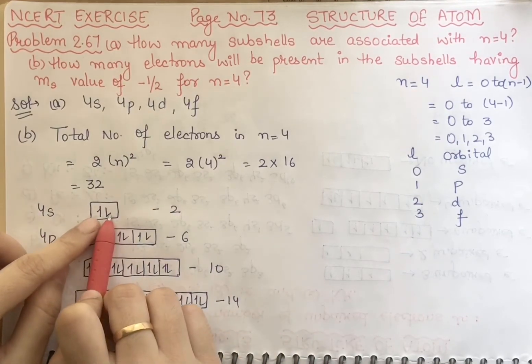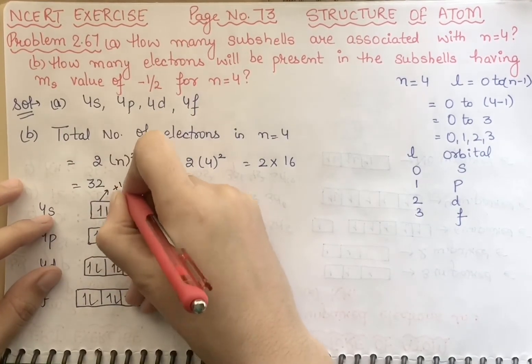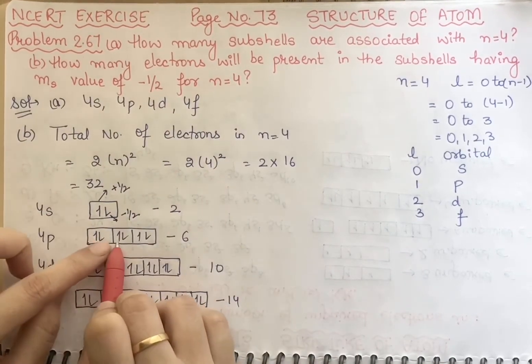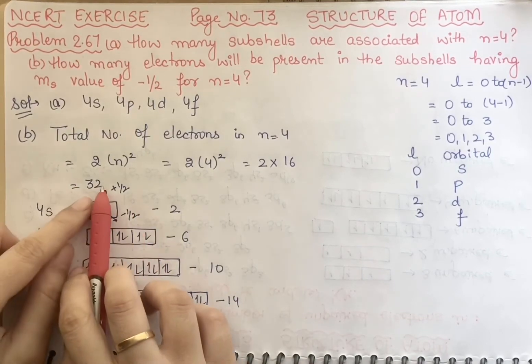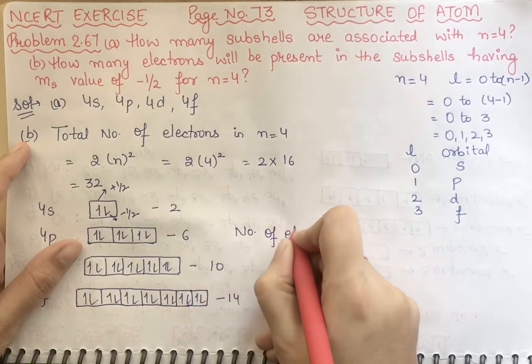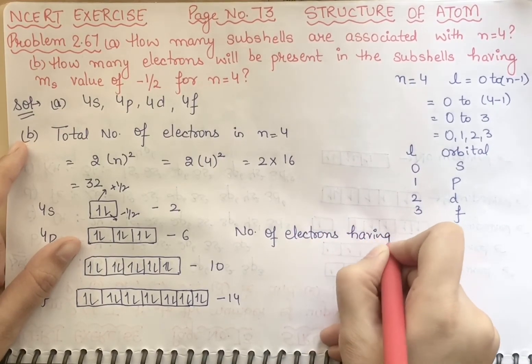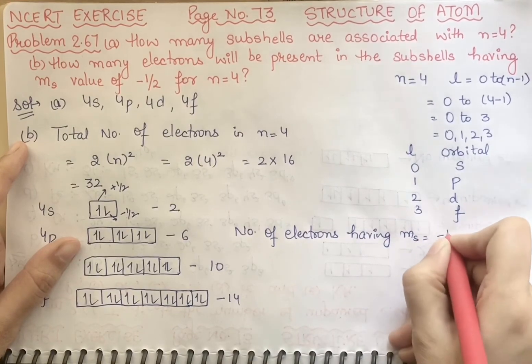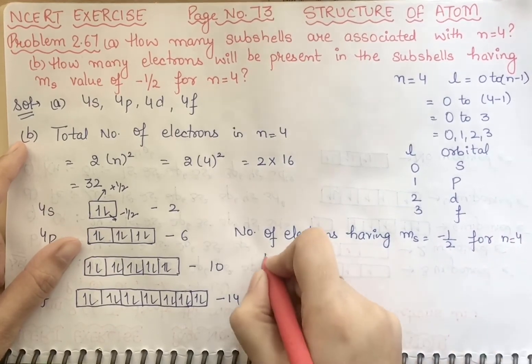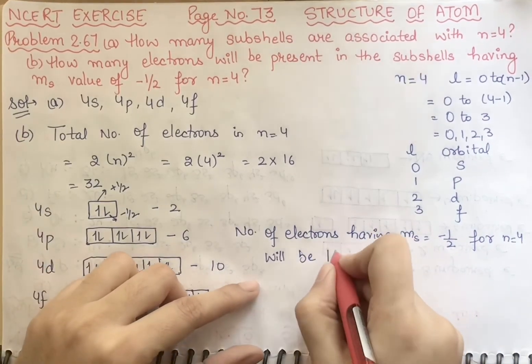Now we have one thing: we have the electron filling, so there is the ms value, that means the spin value. One electron plus half and one electron minus half. So we can say that in 32 electrons, the number of electrons having minus half spin for n equal to 4 will be half of 32, which is 16.